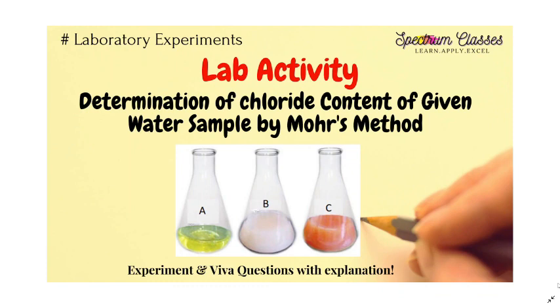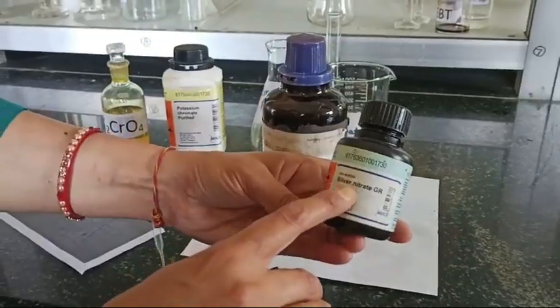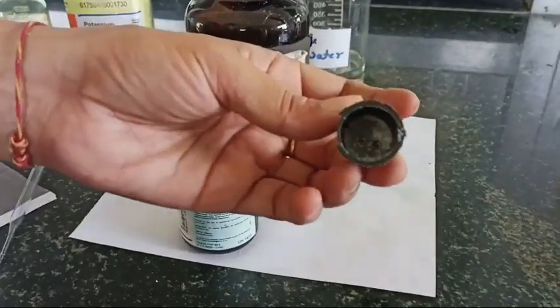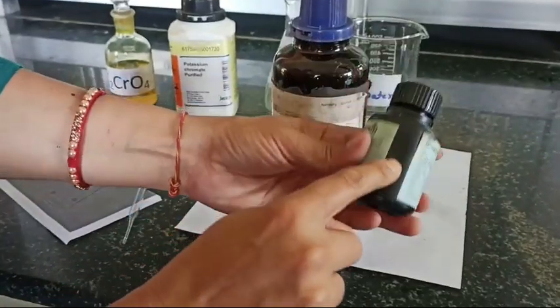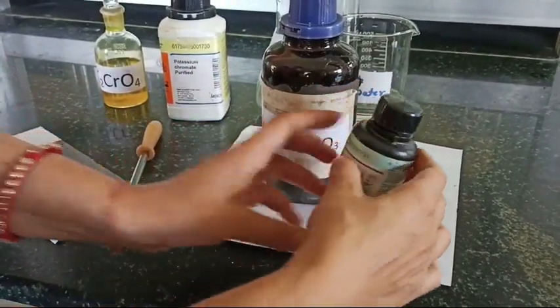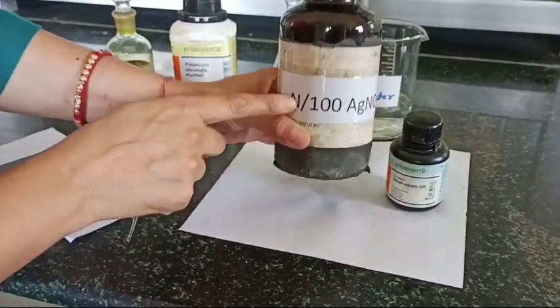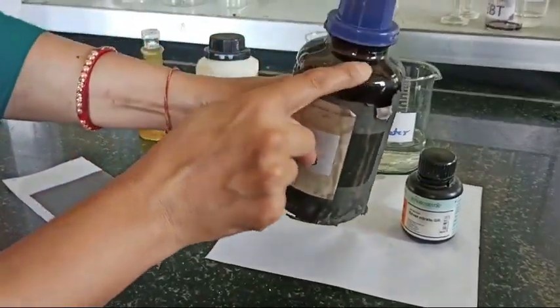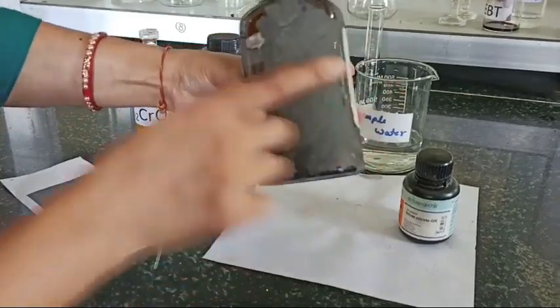Now let's start with the lab activity, and in between the lab activity I will tell you about the viva questions. Here is silver nitrate and this is how it looks like. It is kept in this kind of bottle. This is N by 100 silver nitrate solution and we kept this in brown bottle because this is photosensitive, so light can affect silver nitrate.